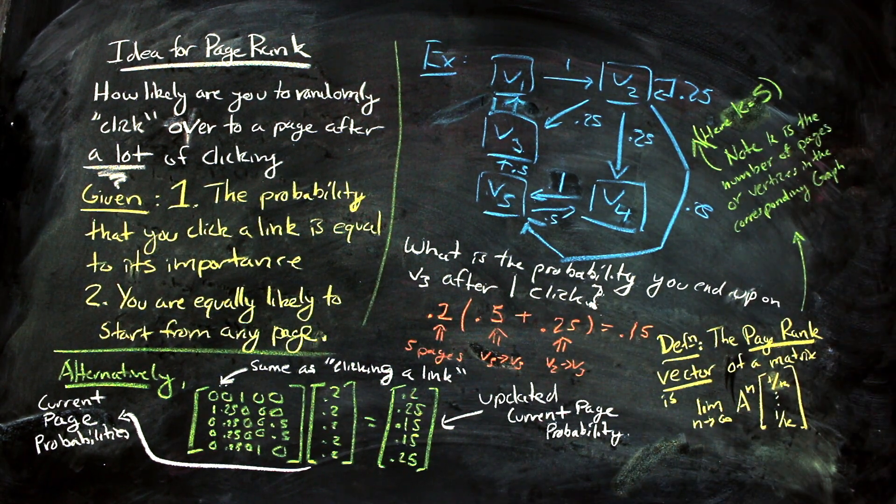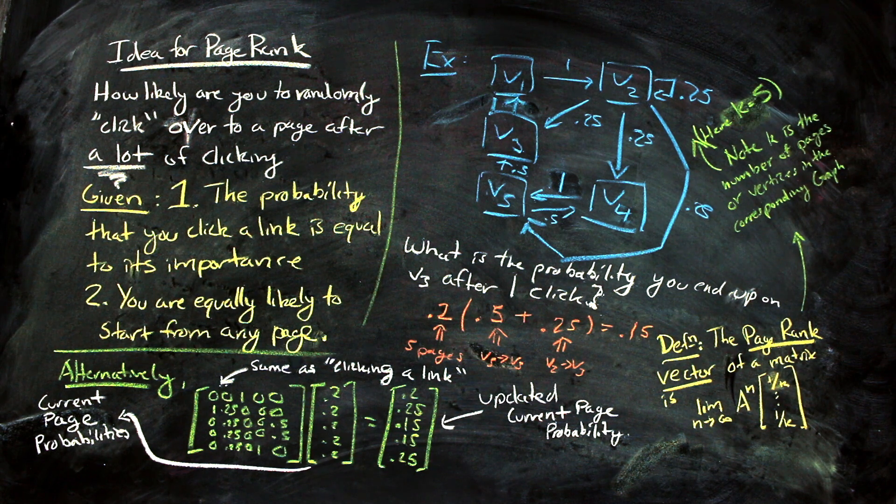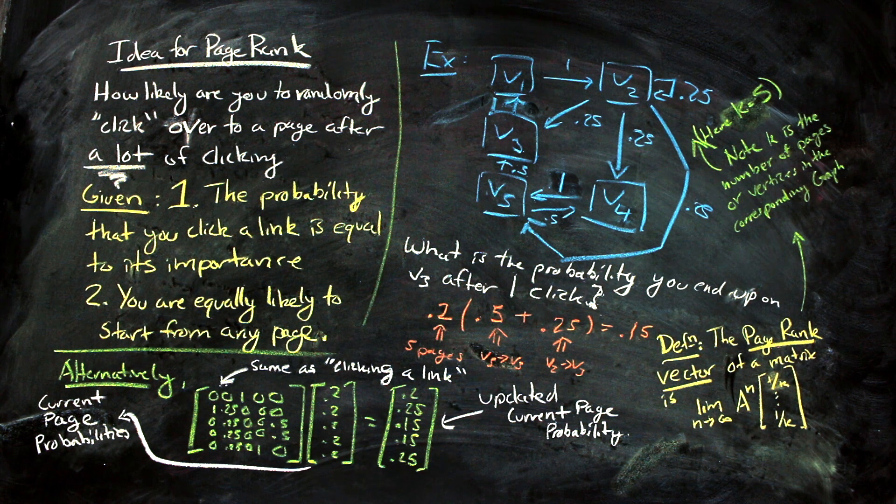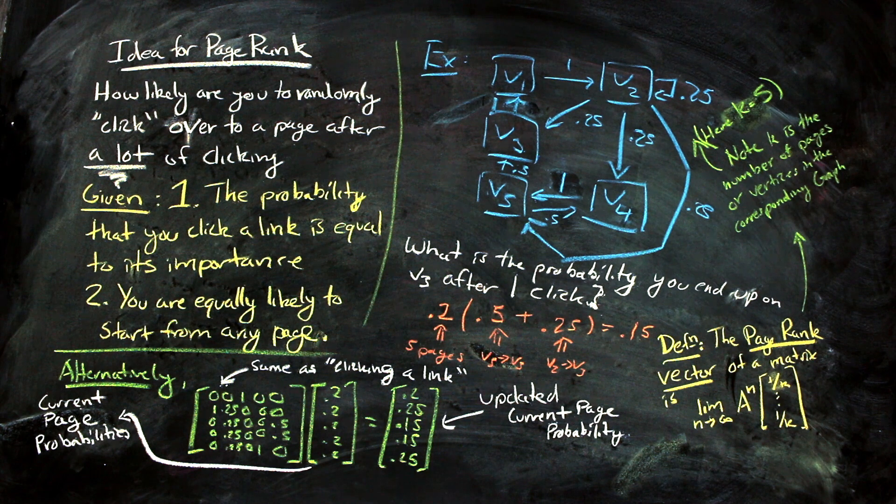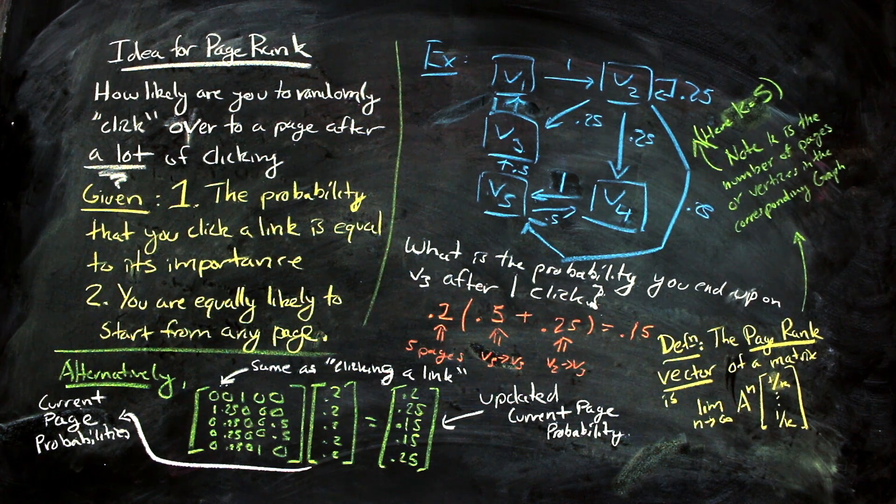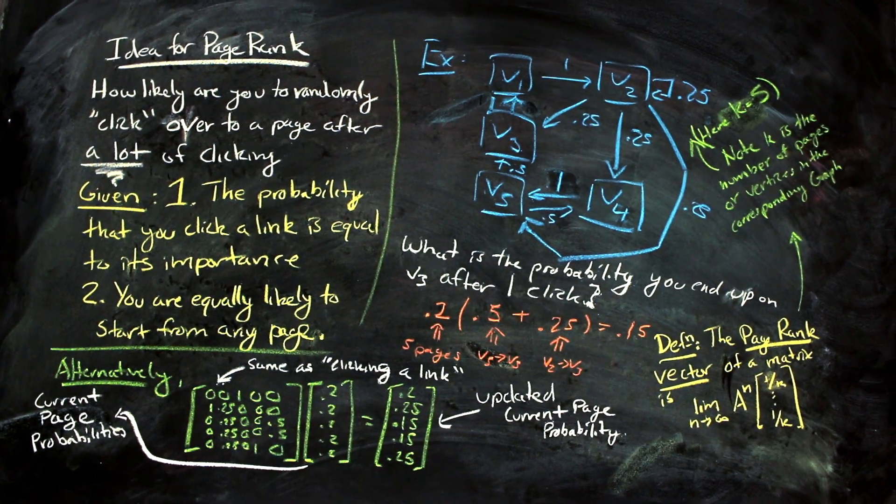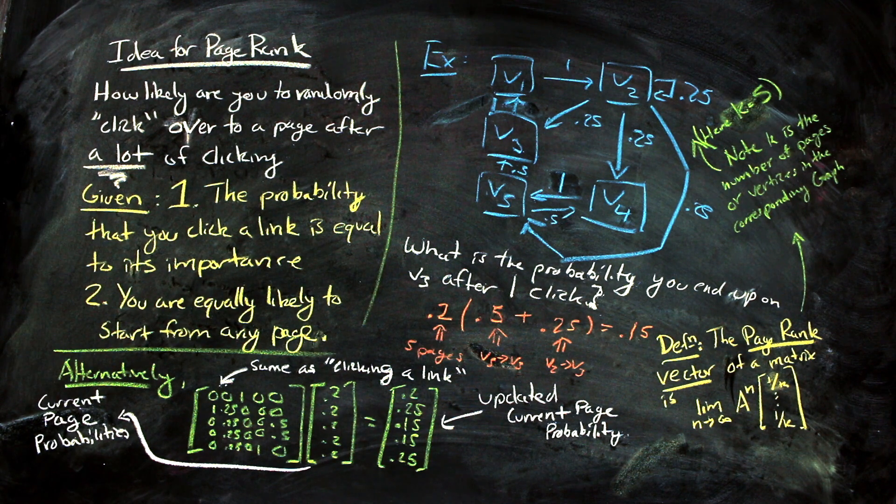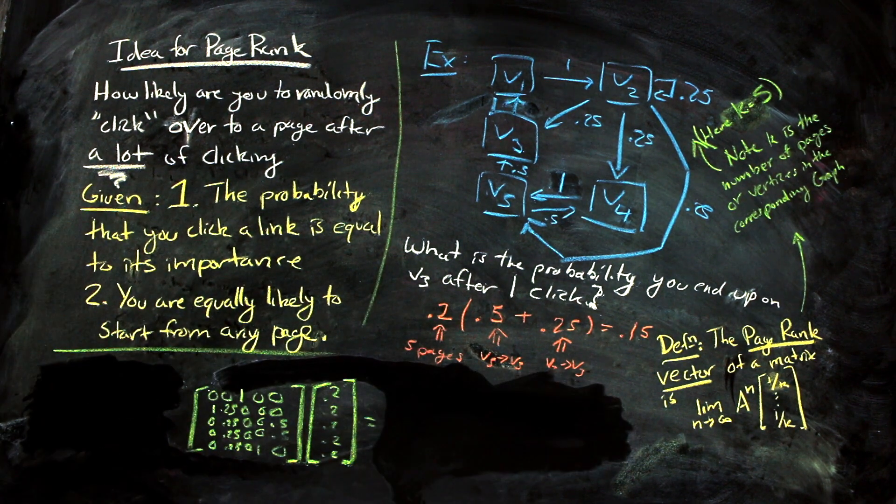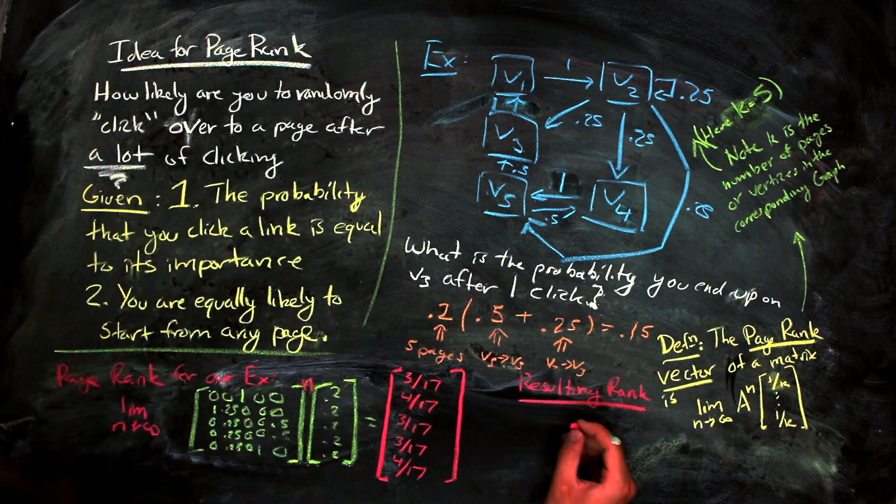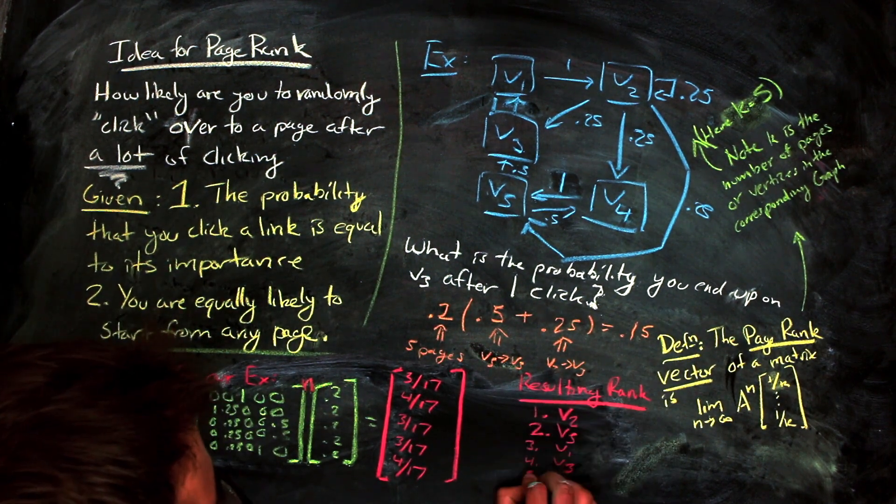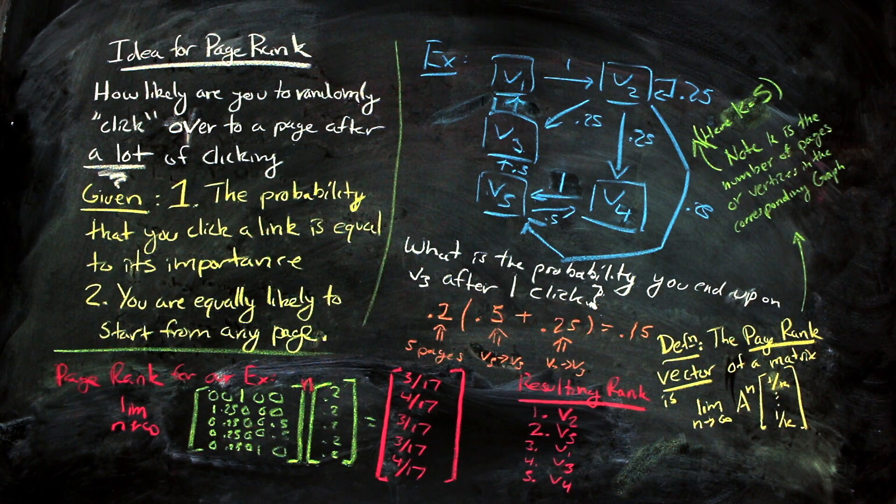Thus, the page rank of a page is just the value in the page rank vector that corresponds to that page, and can be interpreted as the probability that one would end up on that page via random clicking through the web. So for our example, we have this vector as the page rank vector. And so, by the page rank algorithm, you would most likely want to be on pages 2 or 5, as opposed to pages 1, 3, or 4.